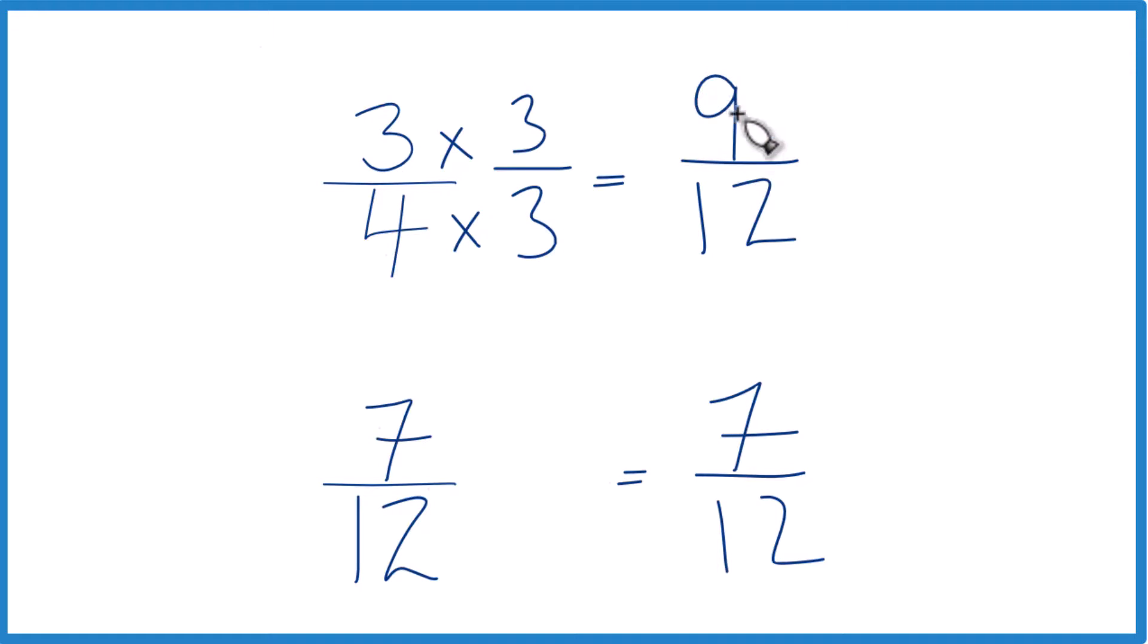3 times 3 is 9. And 9 twelfths, that's an equivalent fraction to 3 fourths. They have the same value.